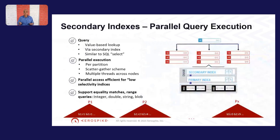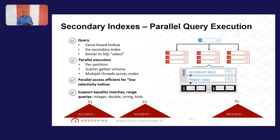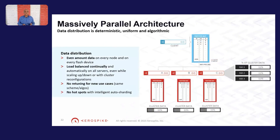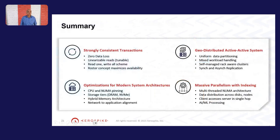Secondary indexes are fairly straightforward. The main point is we co-locate secondary indexes with the partitions — there is a secondary index per partition. We are then able to do a scatter-gather scheme that works really well for low-selectivity indexes, where a single index query lookup returns hundreds, thousands, or even tens of thousands of records. This is a great capability to combine with other parallel systems like Spark and Presto. Overall, parallelism in Aerospike spans across nodes, SSDs, and threads — taking advantage of all available hardware parallelism.